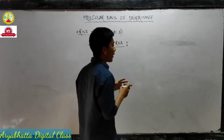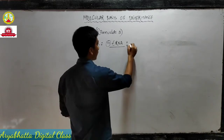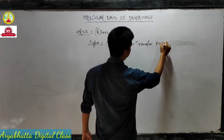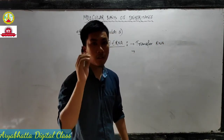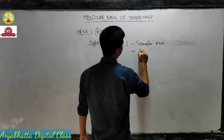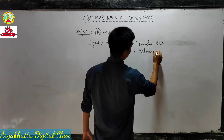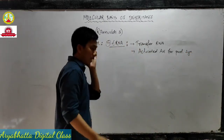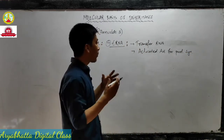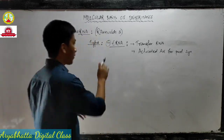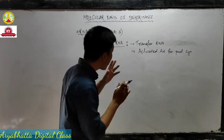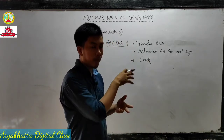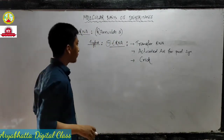Coming back to tRNA - the 't' means transfer, so it stands for transfer RNA. It transfers activated amino acids for protein synthesis. It was first discovered by Crick. The earlier one, mRNA, was discovered by Jacob and Monad - make that correction.